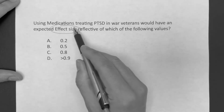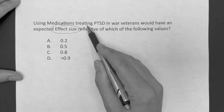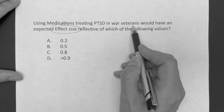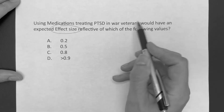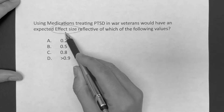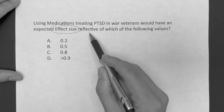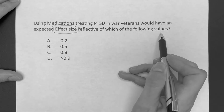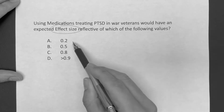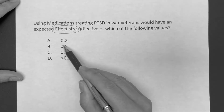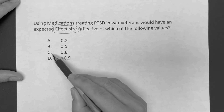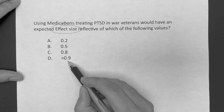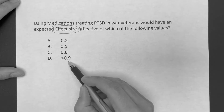This question says: using medications treating PTSD in war veterans would have an expected effect size reflective of which of the following values? Is it A, 0.2; B, 0.5; C, 0.8; or D, greater than 0.9?